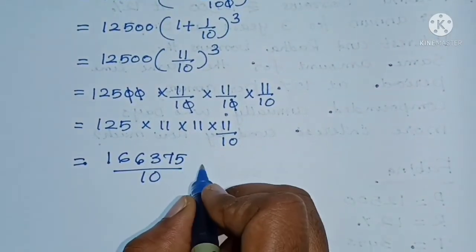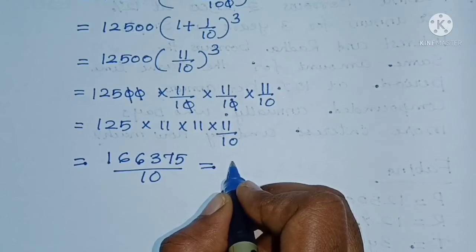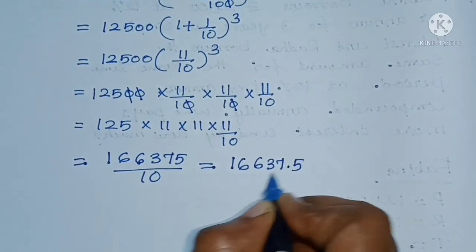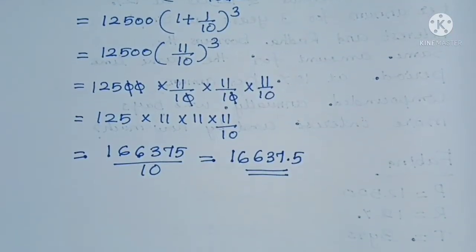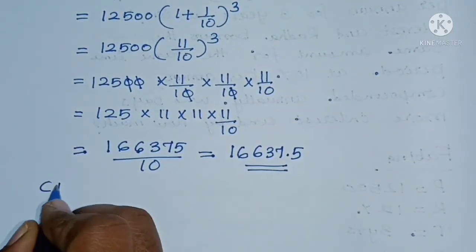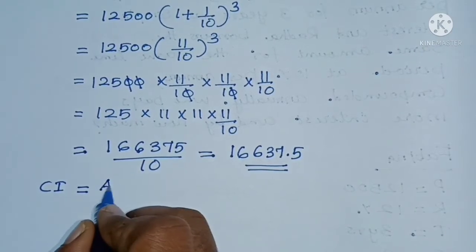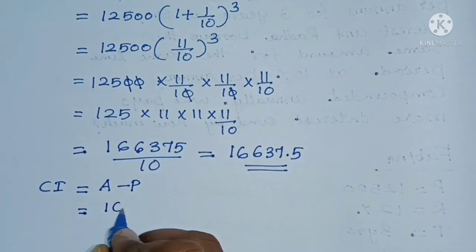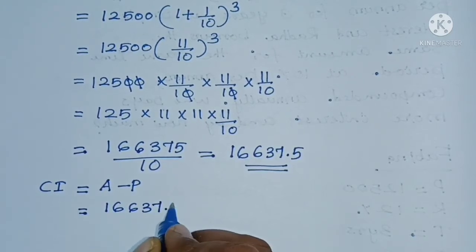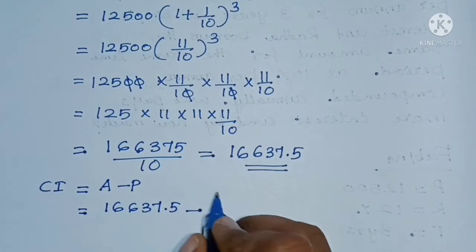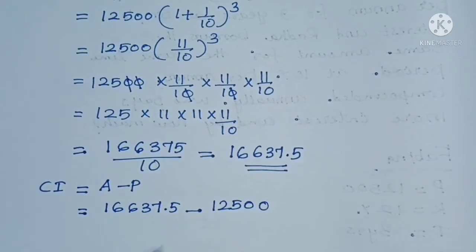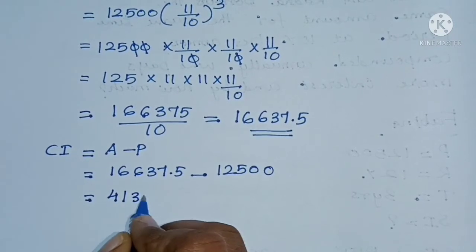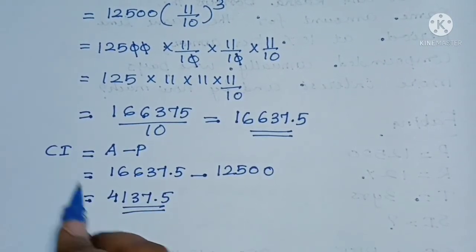This becomes 16,637.5. This is the total amount. From this we find the compound interest: CI equals A minus P, that is 16,637.5 minus 12,500. Subtracting, we get 4,137.5 as the compound interest.